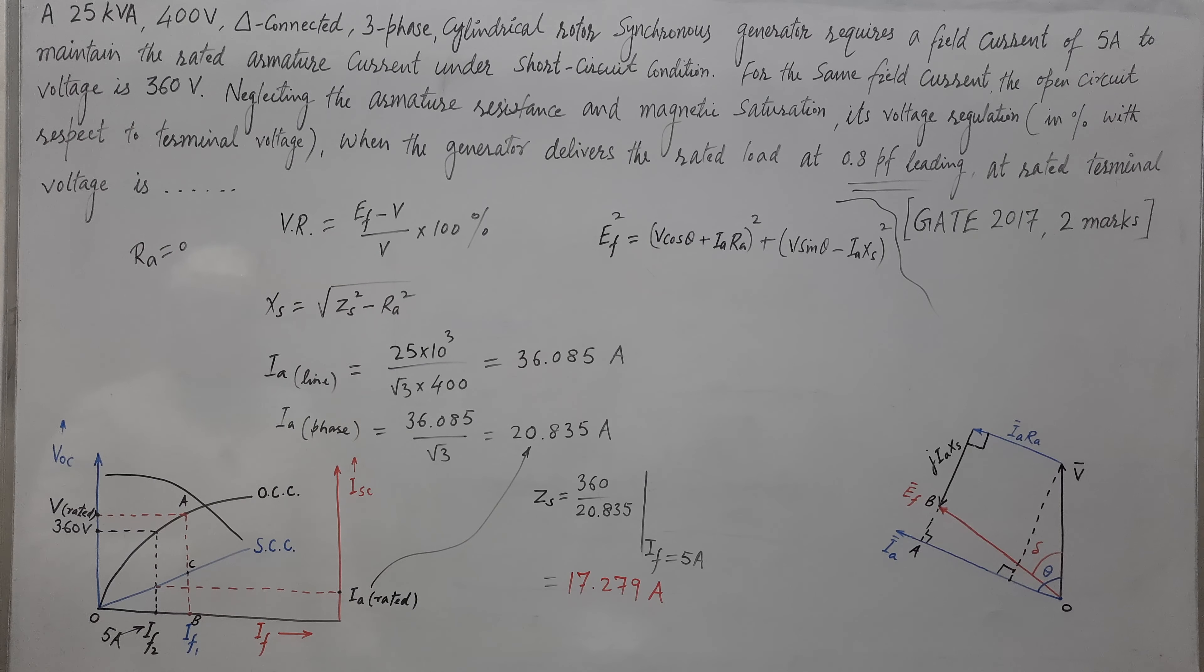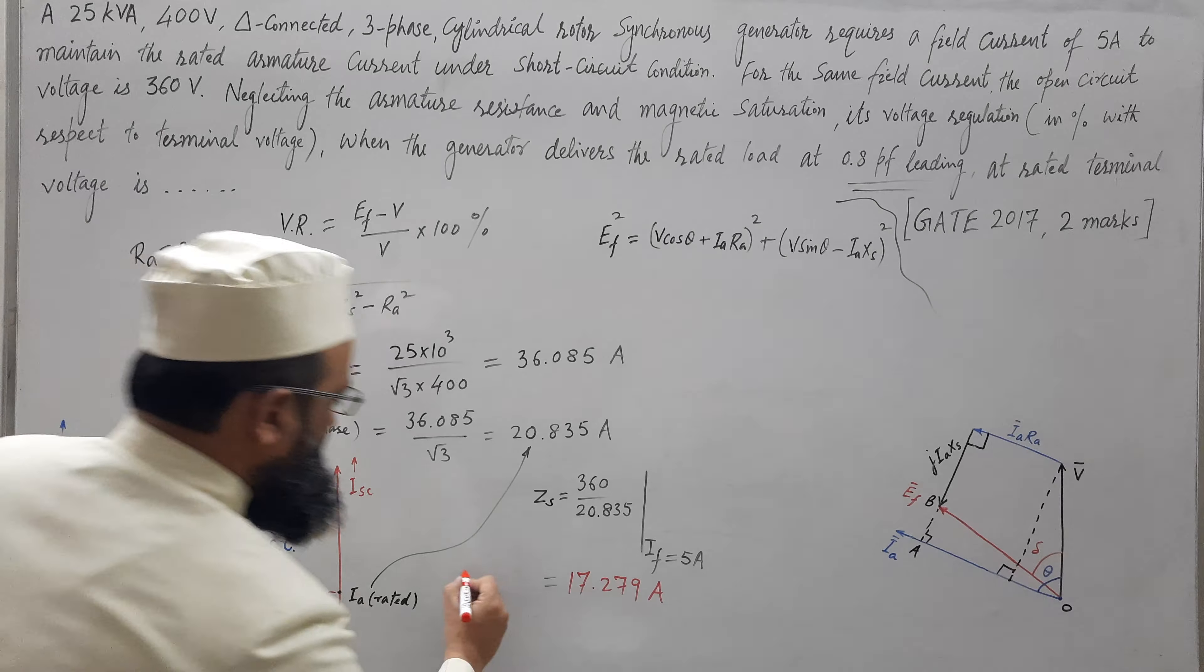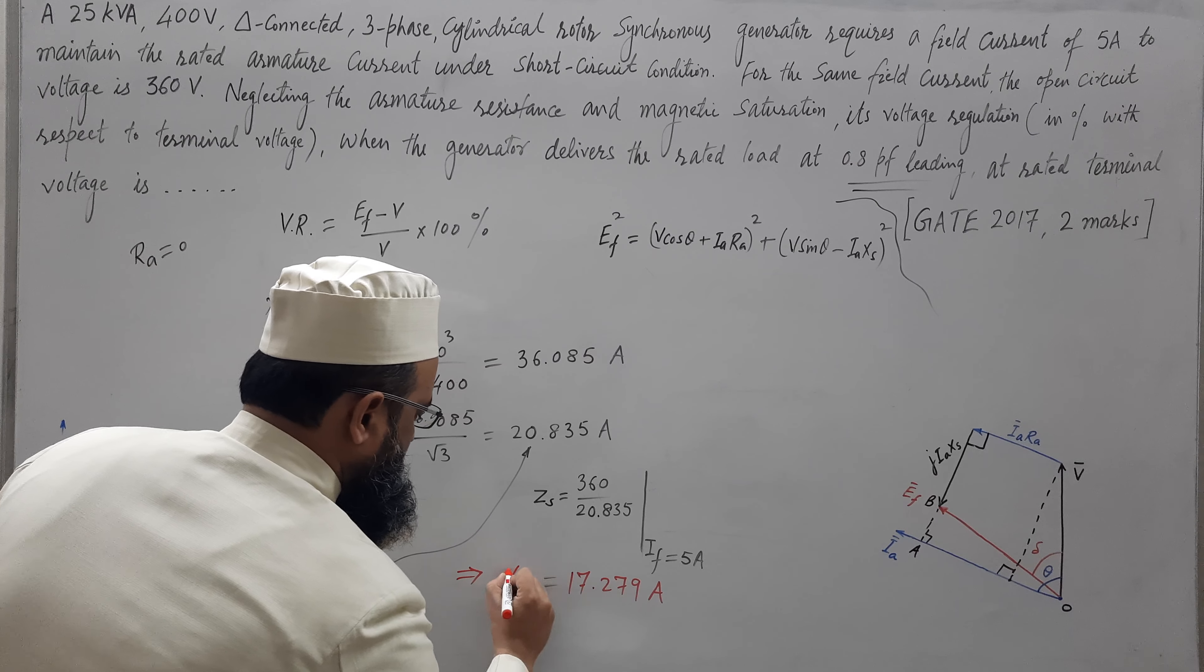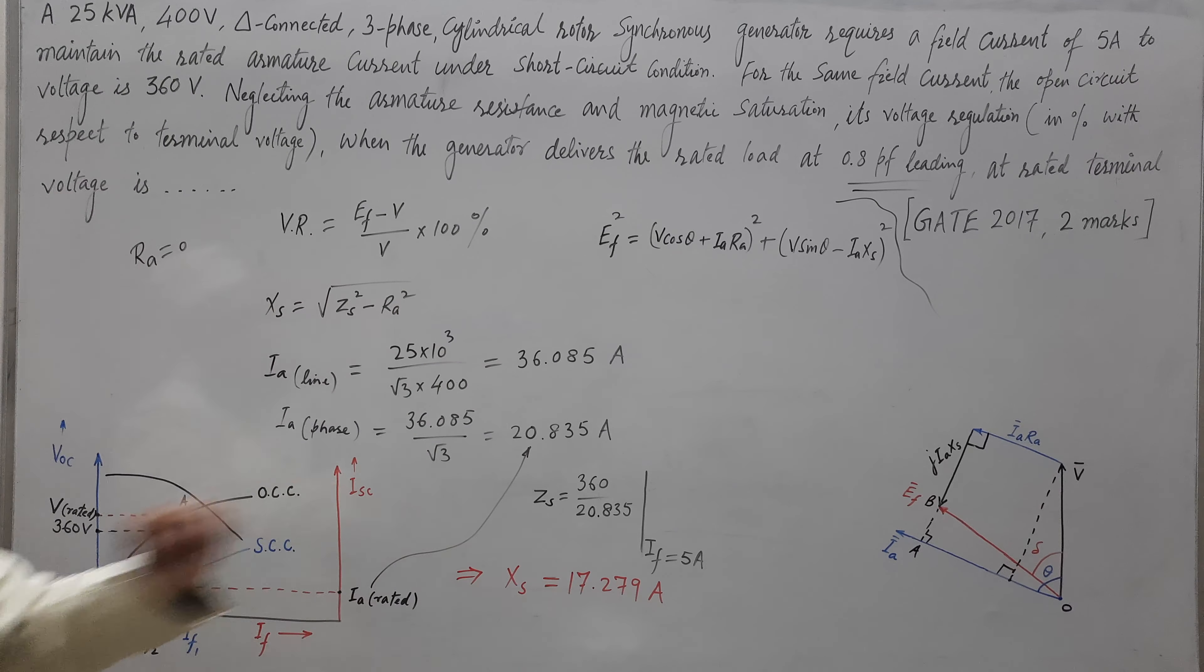ZS and RA is ignored here. So, whatever the value of ZS will be substituted here, the same will be XS. So, this implies XS is obtained as this.